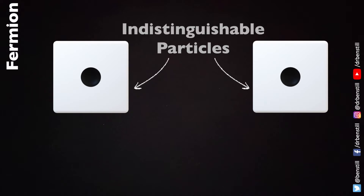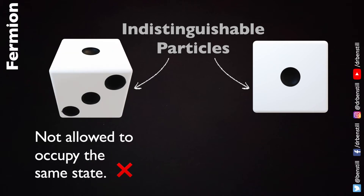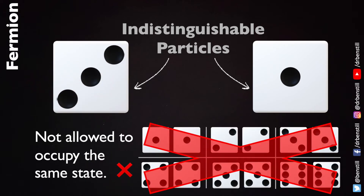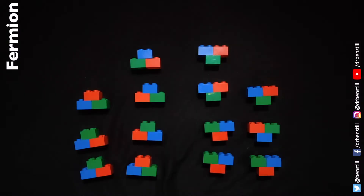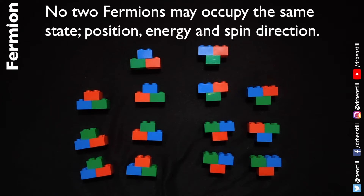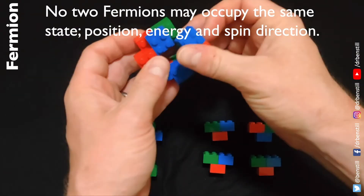Now if we imagine fermions like dice — these are my two fermionic dice — any two fermions are indistinguishable from one another; they can be interchanged without us noticing. But they are also not allowed to occupy the same state, which means we cannot have them face up with the same number. These states aren't possible.